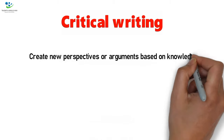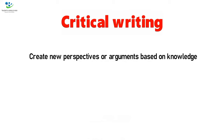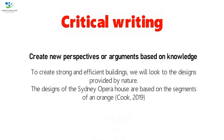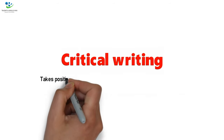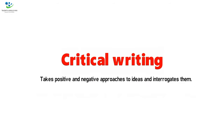Create new perspectives or arguments based on knowledge. For example, to create strong and efficient buildings, we will look to the designs provided by nature. The designs of the Sydney Opera House are based on the segments of an orange. To conclude, critical writing takes positive and negative approaches to ideas and interrogates them. Once you have interrogated an idea or theory, you can then provide an evidenced judgment.